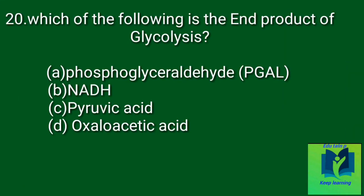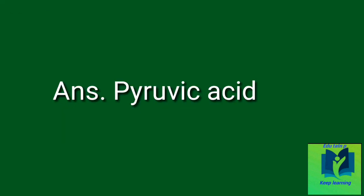Which of the following is the end product of glycolysis? Option A: Phosphoglyceraldehyde. Option B: NADH. Option C: Pyruvic acid. Option D: Oxaloacetic acid. Answer: Pyruvic acid.